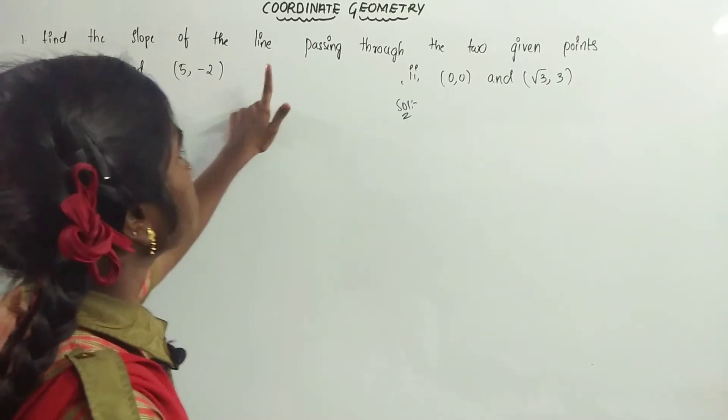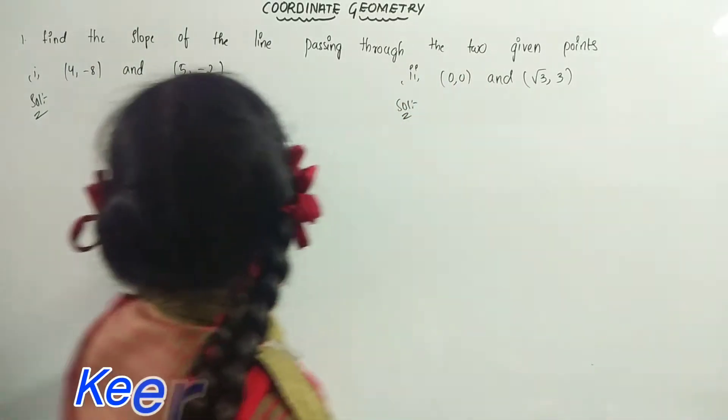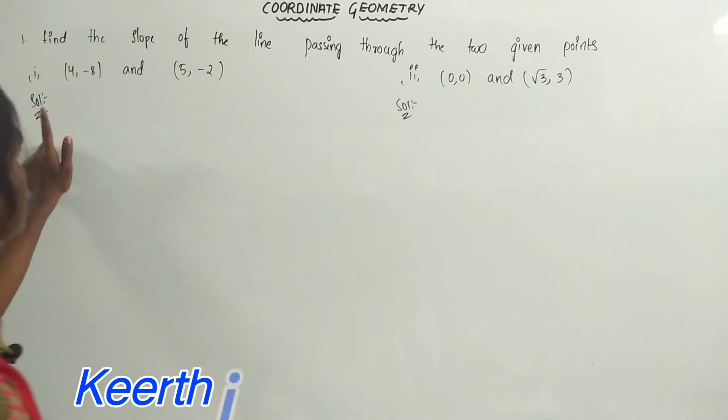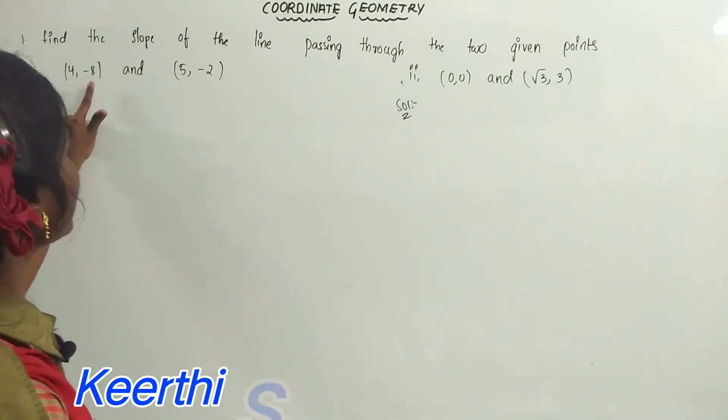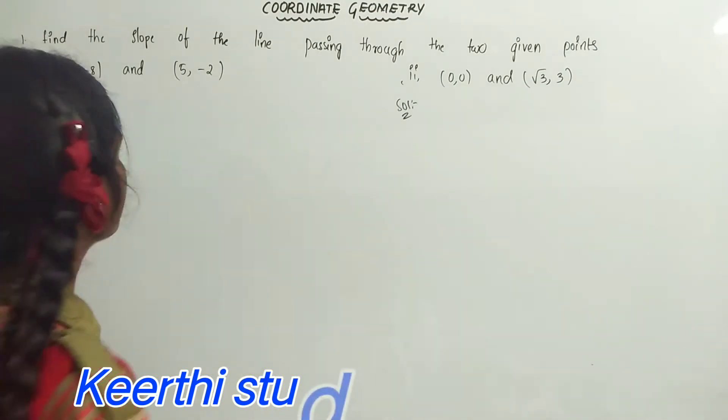Find the slope of the line passing through the two given points. First we have to find the first one: (4, -8) and (5, -2).